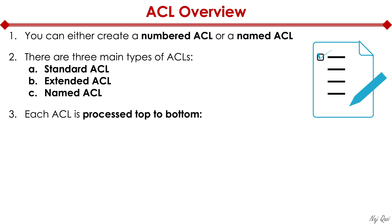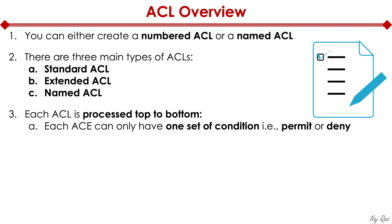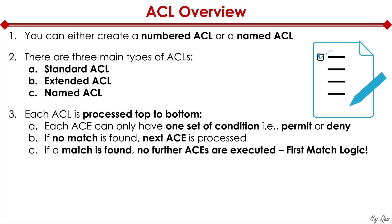Each ACL is processed top to bottom. Each access control entry can only have one set of conditions — either permit or deny. If no match is found, the next entry is processed. If a match is found, that's it — processing stops and no further ACEs are executed. This is first match logic: as soon as the router finds the first match, it stops executing. For example, if you have 10 entries in your ACL and the first entry matches the packet, the nine other statements will be ignored.